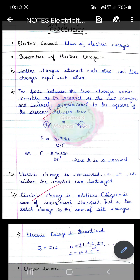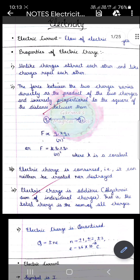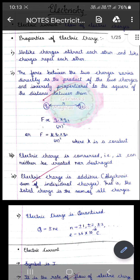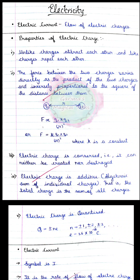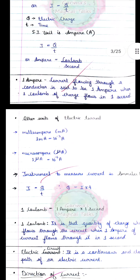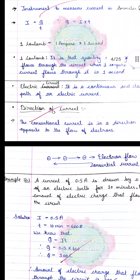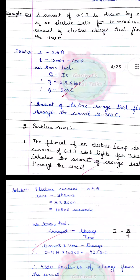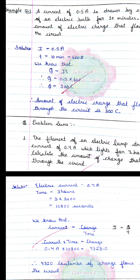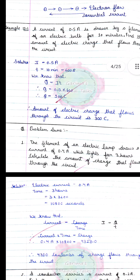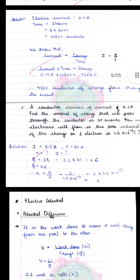Hello students, we are doing the chapter Electricity. In this chapter we have discussed about the current, charge, and potential difference. We have already discussed that the direction of the current is opposite to the flow of the electrons. There are some numericals based on the current and the charge.